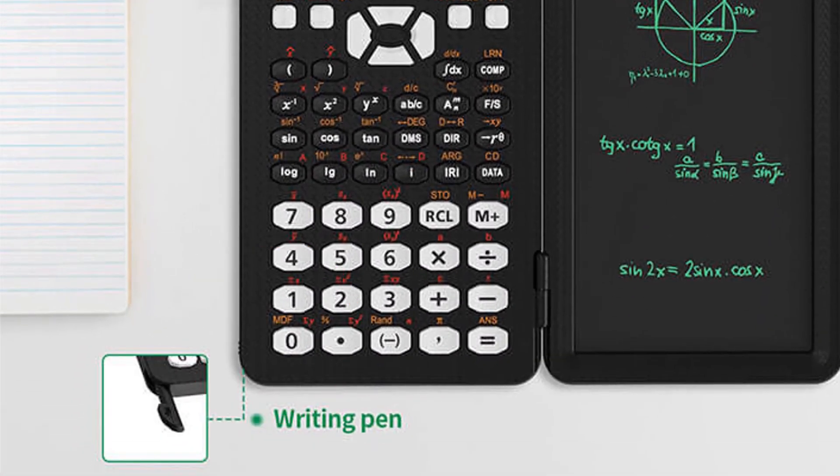Then at the bottom left of this calculator we have a hole where you can insert your pen after being used, and I'm pretty sure this is to protect your pen from getting lost.